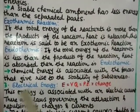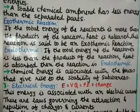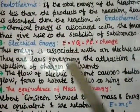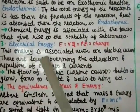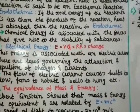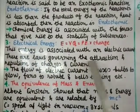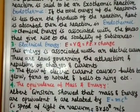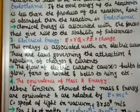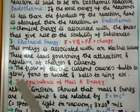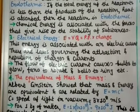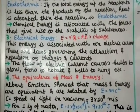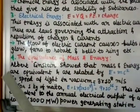Chemical energy is associated with the forces that give rise to the stability of substances. Number three: Electrical Energy = V × q, where V is potential and q is charge. This energy is associated with electric current. The flow of electric current causes bulbs to glow, fans to rotate, and bells to ring.